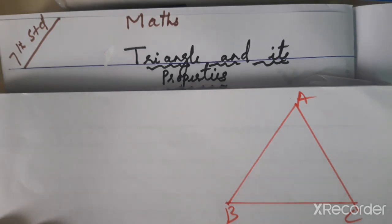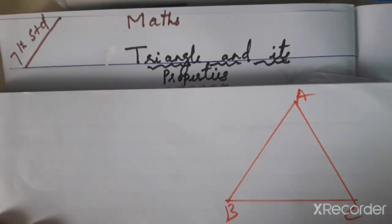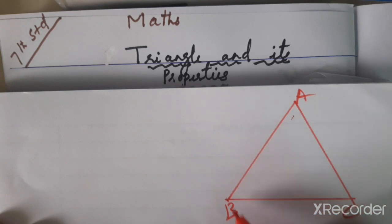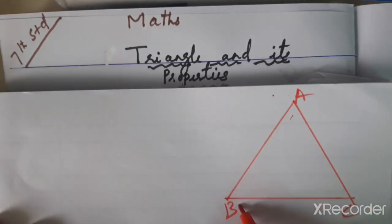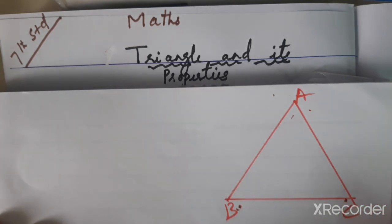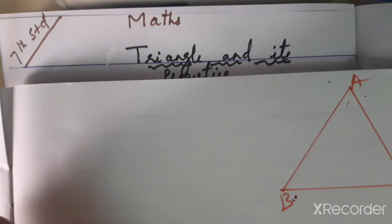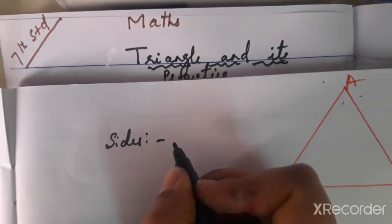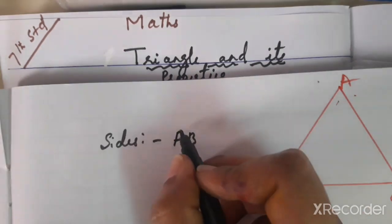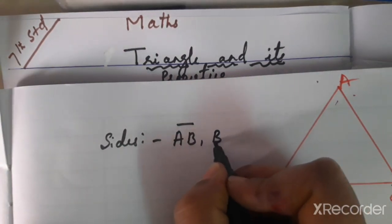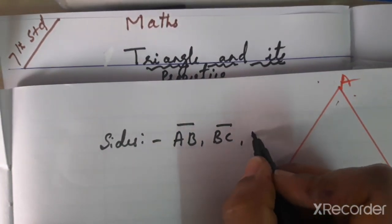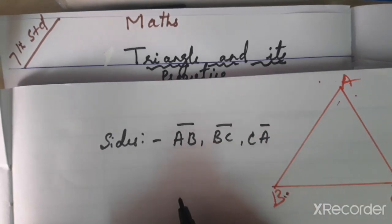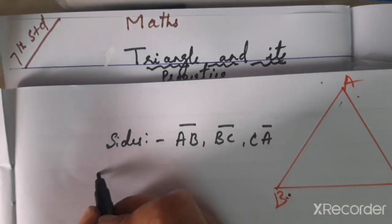Today we are looking at the triangle and its properties. In triangle ABC, AB is a side of the triangle, BC is also a side, and AC is also a side. So we can see the sides are line AB, line BC, and line AC.